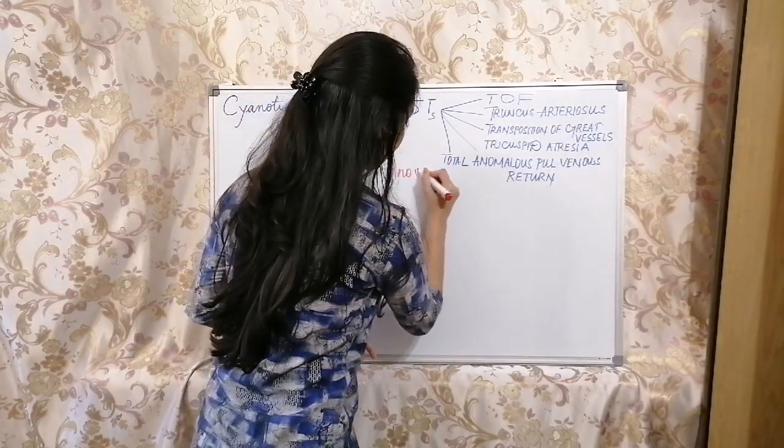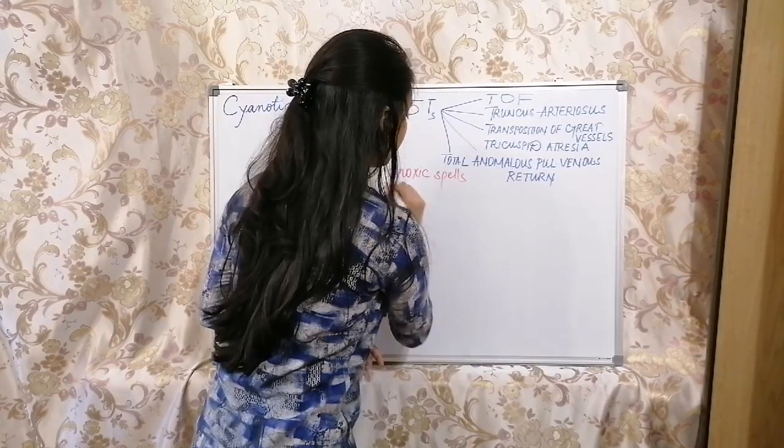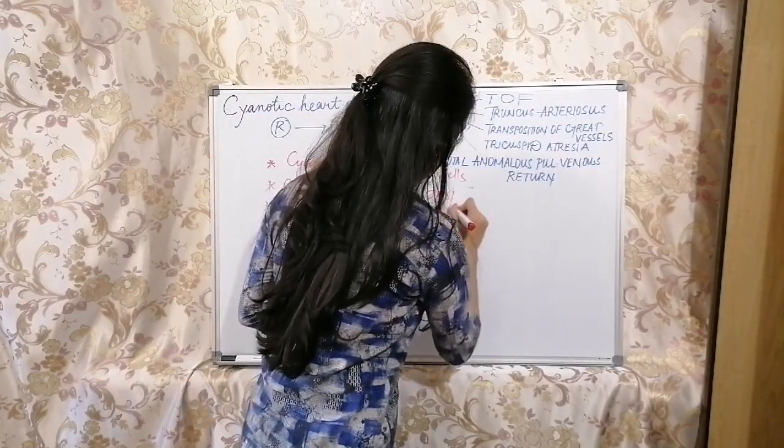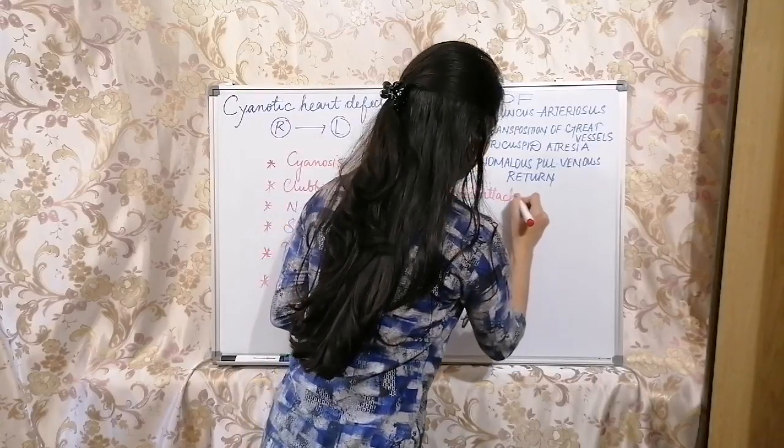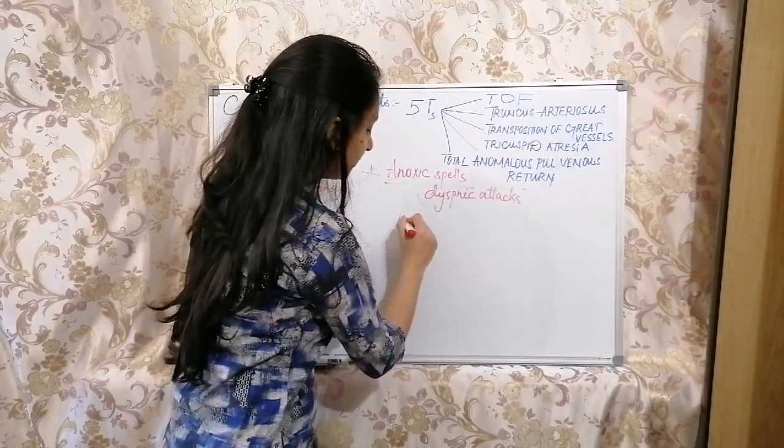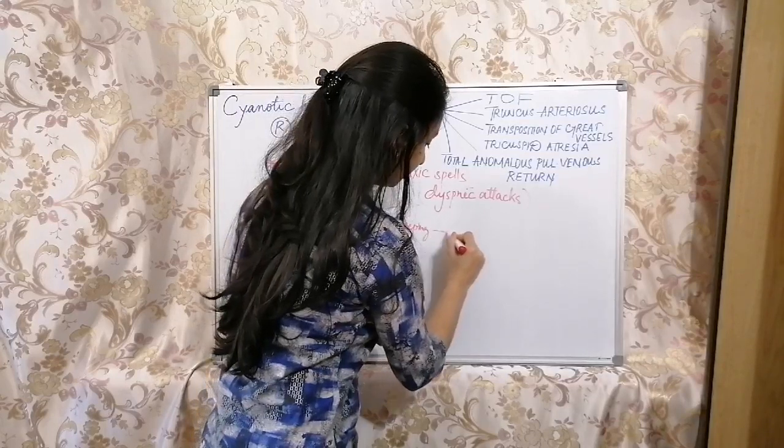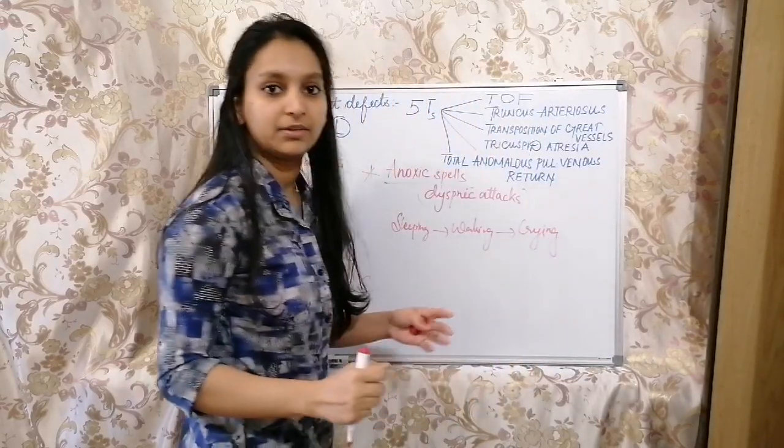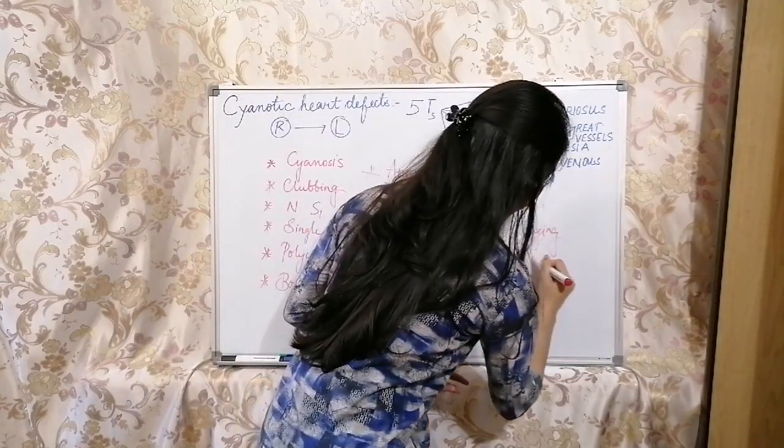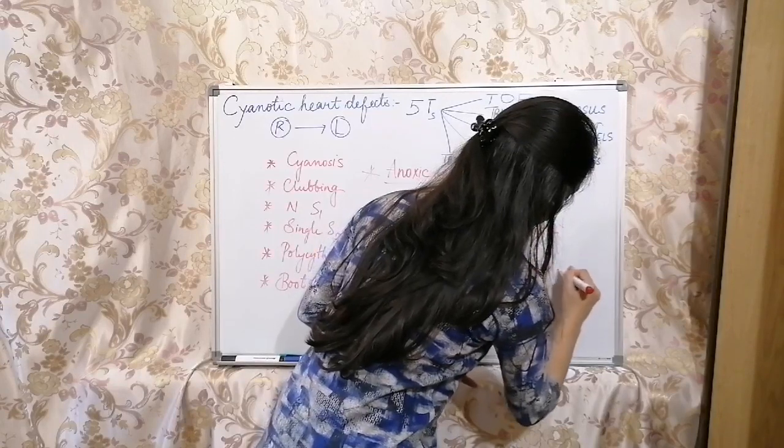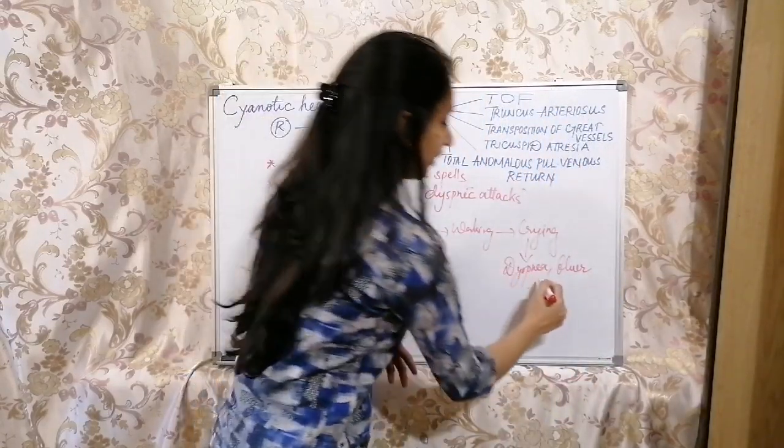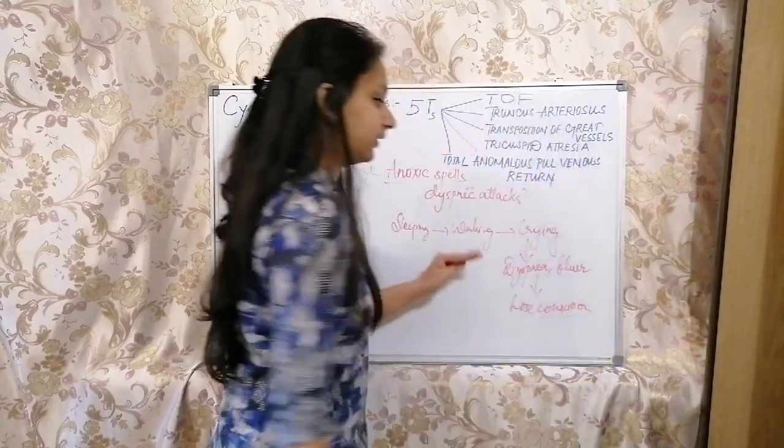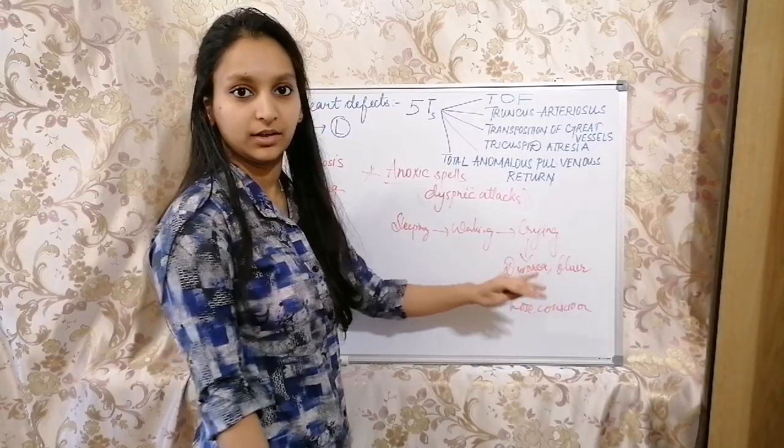What is actually anoxic spells? They are paroxysmal attacks of dyspnea. How is it seen in a baby? Baby will be sleeping, and after waking up, baby starts crying. What happens here is baby suddenly turns bluer in color and undergoes dyspnea. Baby starts facing dyspnea and appears more blue in color, and then baby will lose consciousness. This is a flow chart of what is actually happening in anoxic spells.